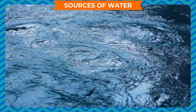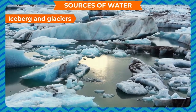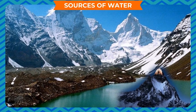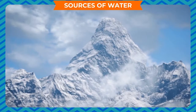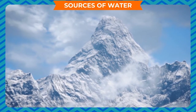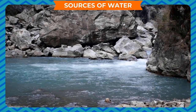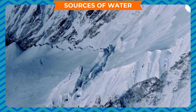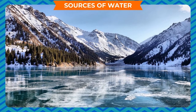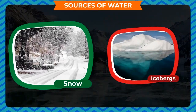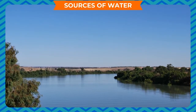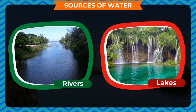Icebergs and glaciers: In the regions of the Himalayas and some other mountains, water is available in the form of snow and ice. Icebergs and glaciers at high altitudes of the Himalayas are also one of the biggest sources of fresh water. The frozen state of this water exists due to very low temperatures in these hilly regions. When snow, icebergs, and glaciers melt, they convert into water that ultimately flows into rivers, lakes, etc. as surface water and is used for many purposes.